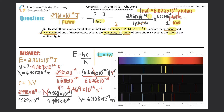Multiplying by Avogadro's number: 2.961 times 10 to the negative 19th times 6.022 times 10 to the 23rd gives 1.783 times 10 to the 5th joules per mole. So the total energy in one mole of these photons is 1.783 times 10 to the 5th joules per mole.